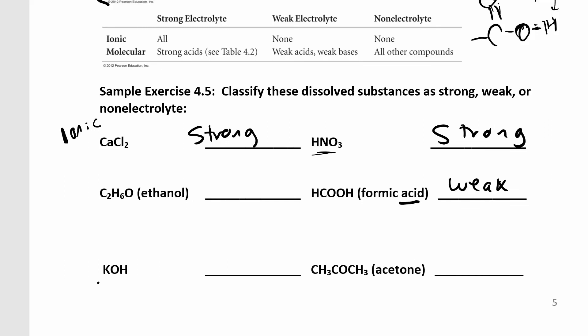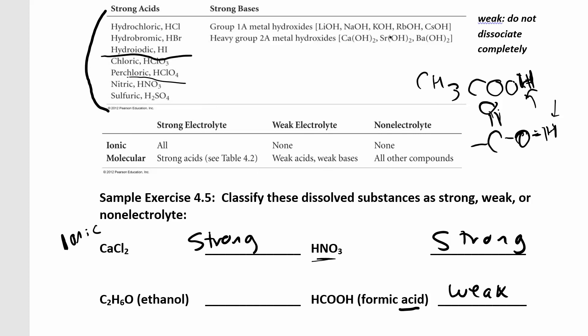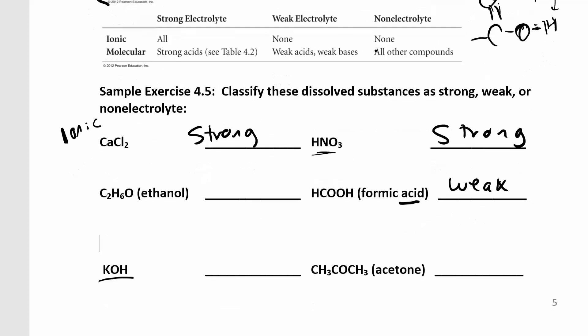KOH, what do you think about KOH? KOH is a, OH is a base. It's a group one metal hydroxide. Here's potassium hydroxide. It's a strong base, so because it's a strong base that makes it a strong electrolyte.